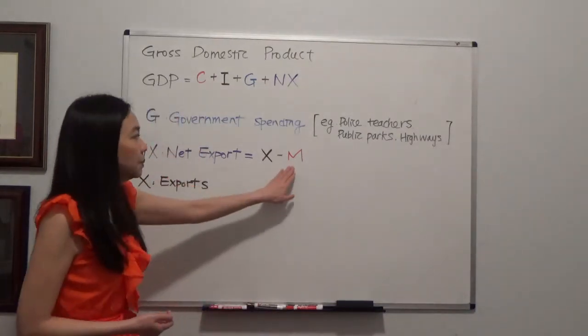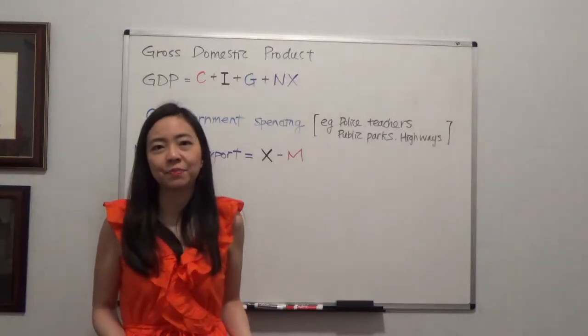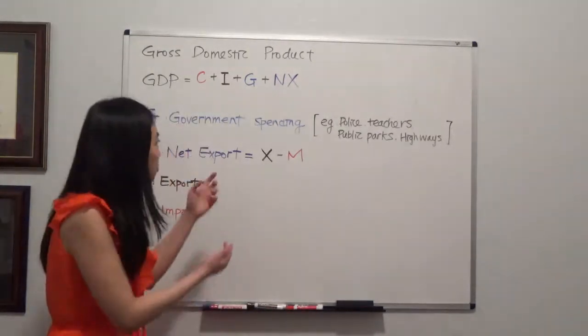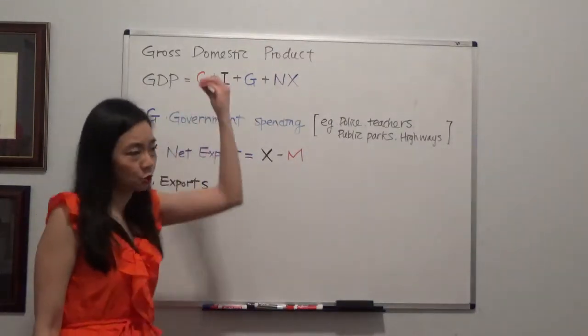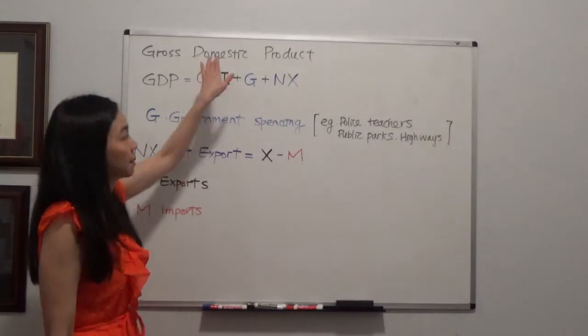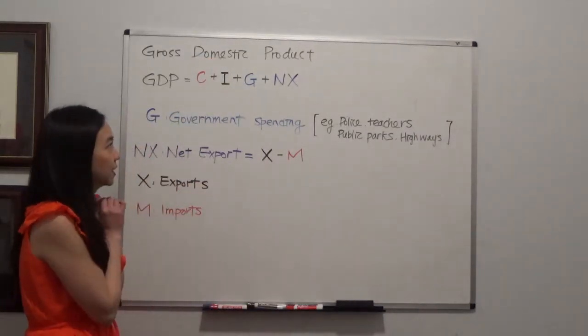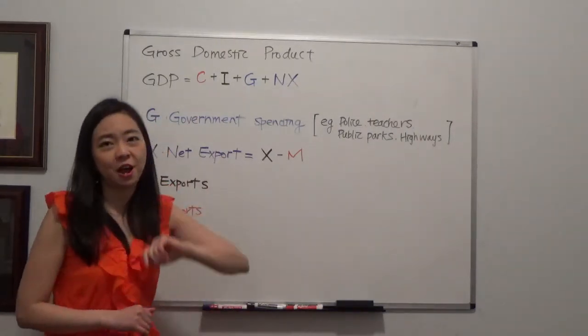What about imports? Imports are the goods that we consume, but we did not produce that. So say German beer and French wine, we consume that, so it is in consumption. But we need to subtract that out because we did not produce that domestically. And therefore, when we're calculating gross domestic product, we have to subtract our imports.